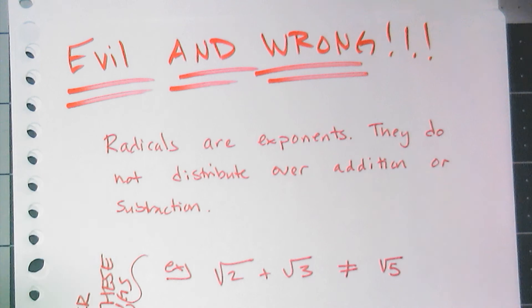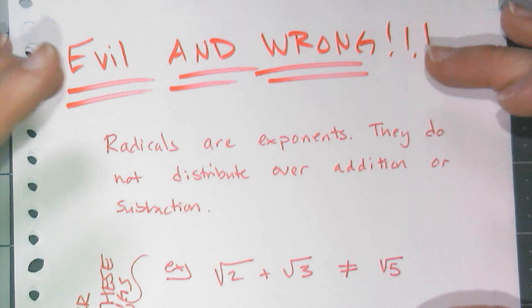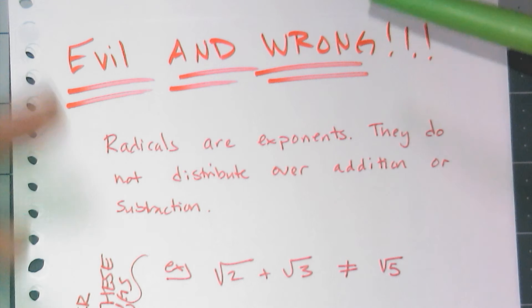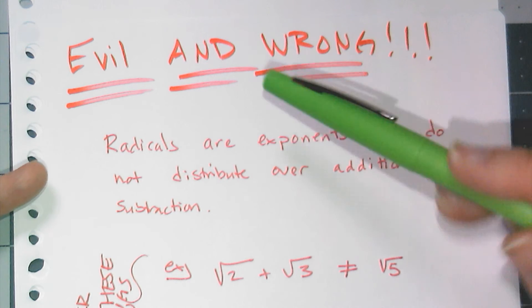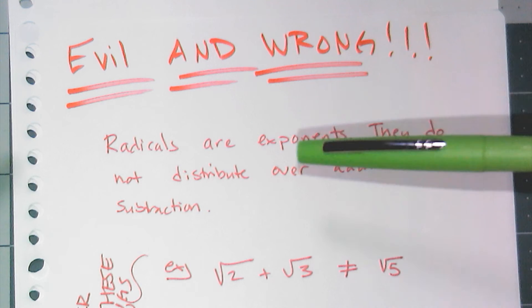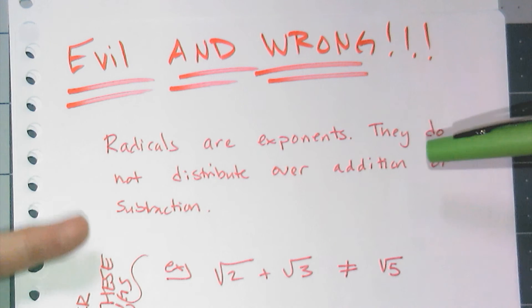Now there is something I would like to emphasize in this video and repeatedly again in future videos: there is something that you can do that is mathematically invalid, and so mathematically invalid that we consider it to be evil and wrong. Okay, so radicals are exponents by definition. They're fractional exponents, so the square root is the same thing as raising something to the one-half power. And by the order of operations, they do not distribute over addition and subtraction.